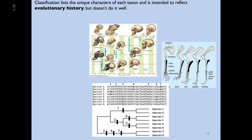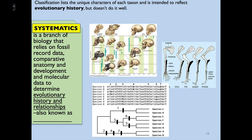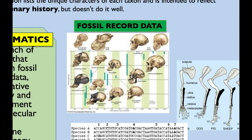We mentioned that classification takes common characteristics and puts animals into groups, intended to reflect evolutionary history. There's another branch of biology called systematics that relies on fossil data, comparative anatomy, development, and molecular data to determine evolutionary history and relationships. These relationships are known as the phylogeny — the evolutionary history and relationship of one organism to another. Let's take a look at fossil record data to start.